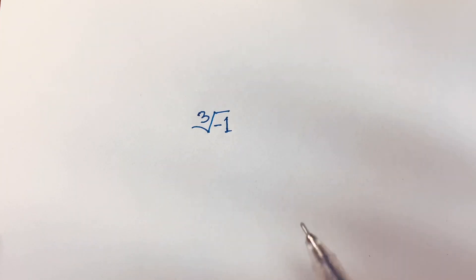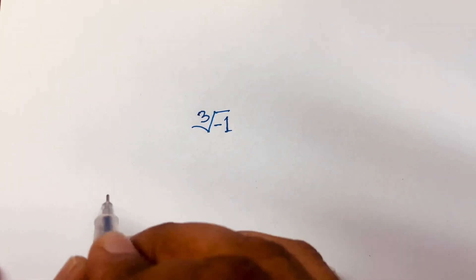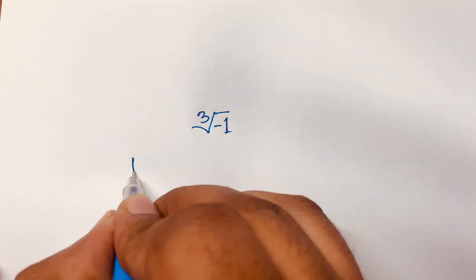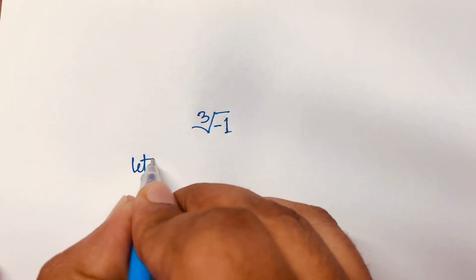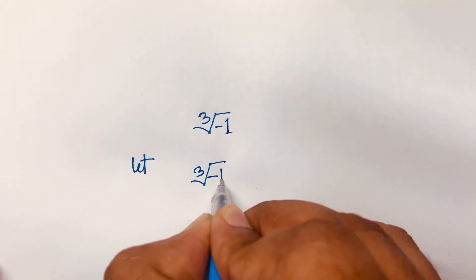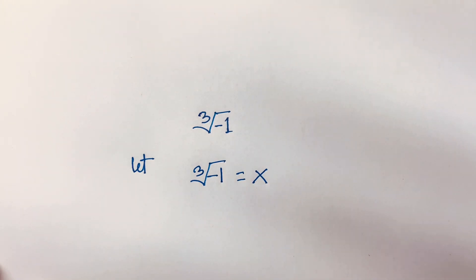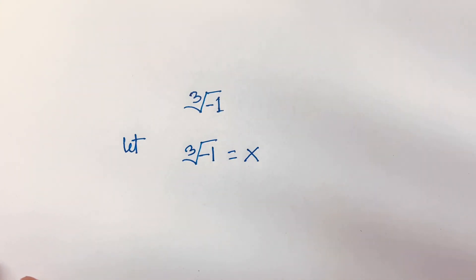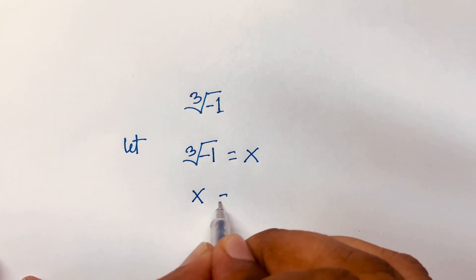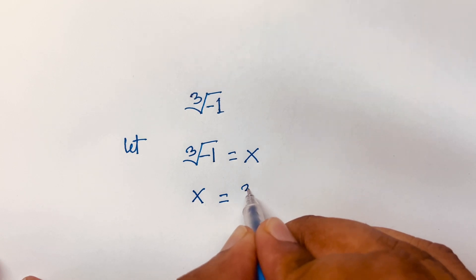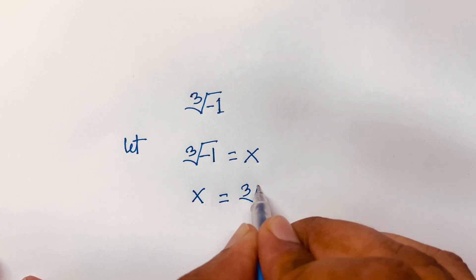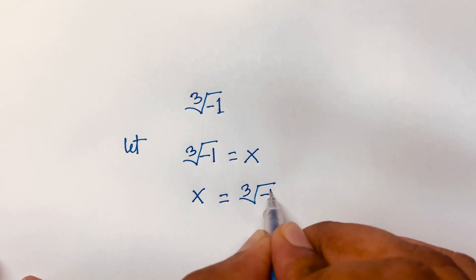How to solve cube root of minus 1? So, if you want to solve this question, first of all, let cube root of minus 1 be equal to x. Then x is equal to the cube root of minus 1.